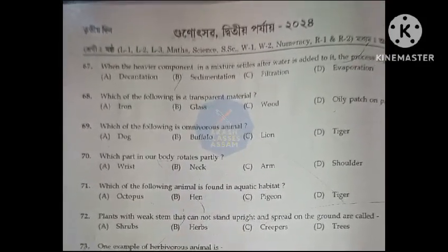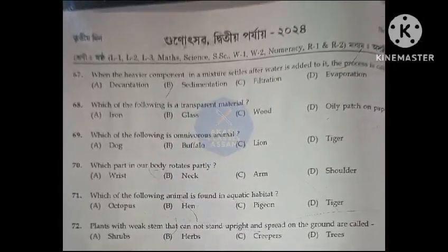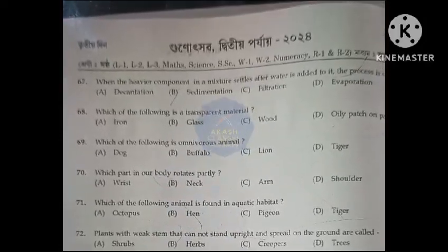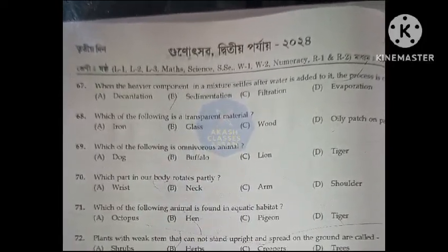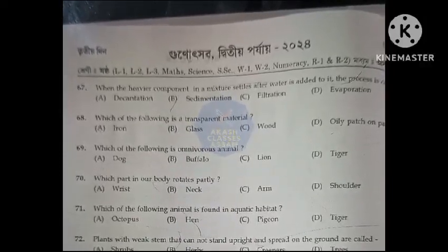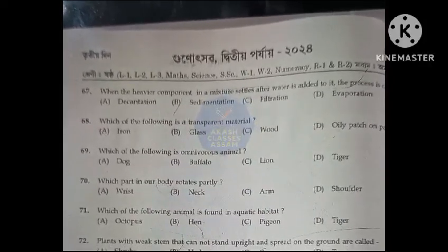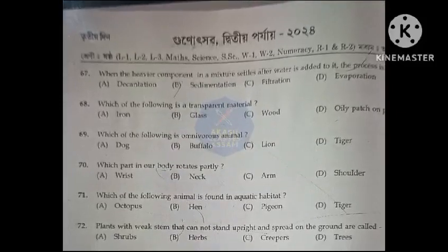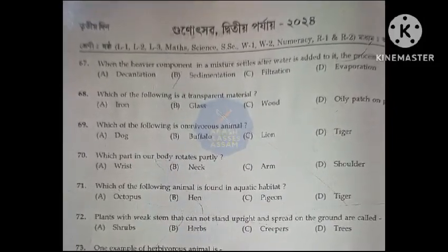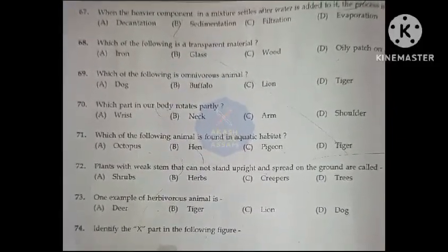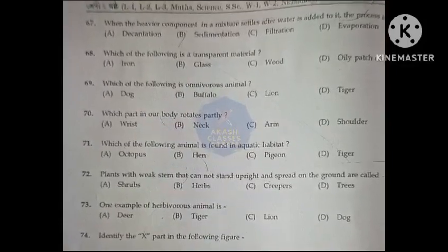Which of the following is an omnivorous animal? Option A, dog. Which part of our body rotates partly? Option D, shoulder. Which of the following animal is found in aquatic habitat? Option A, octopus. Plants with weak stem that cannot stand upright and spread on the ground are called: Option C, creepers. One example of herbivorous animal is: Option A, deer.